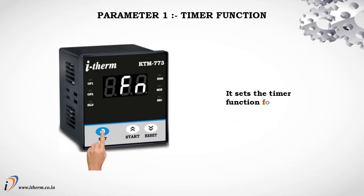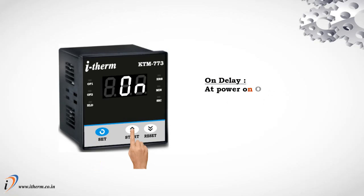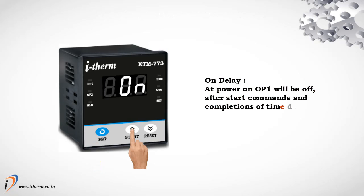Parameter 1: Timer function. It sets the timer function for output 1. On delay: at power on, output 1 will be off. After start command and completion of time delay, output 1 will turn on.